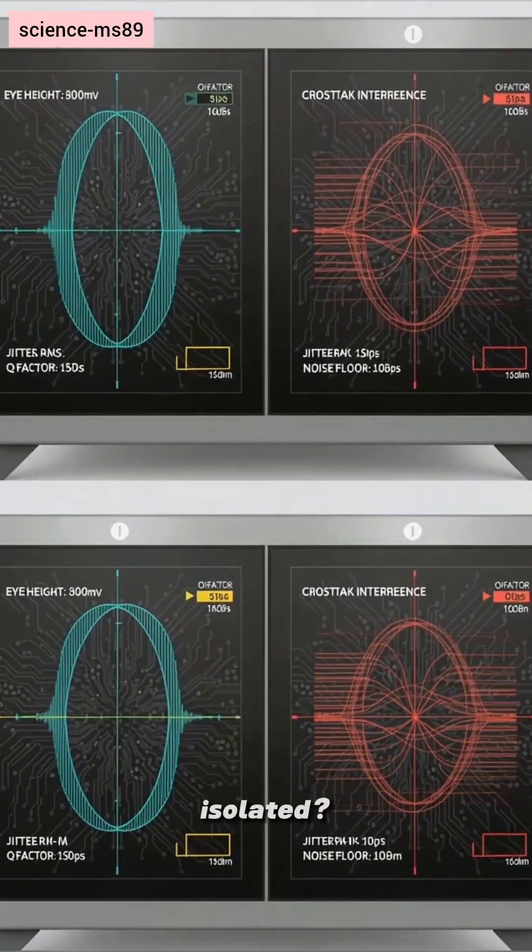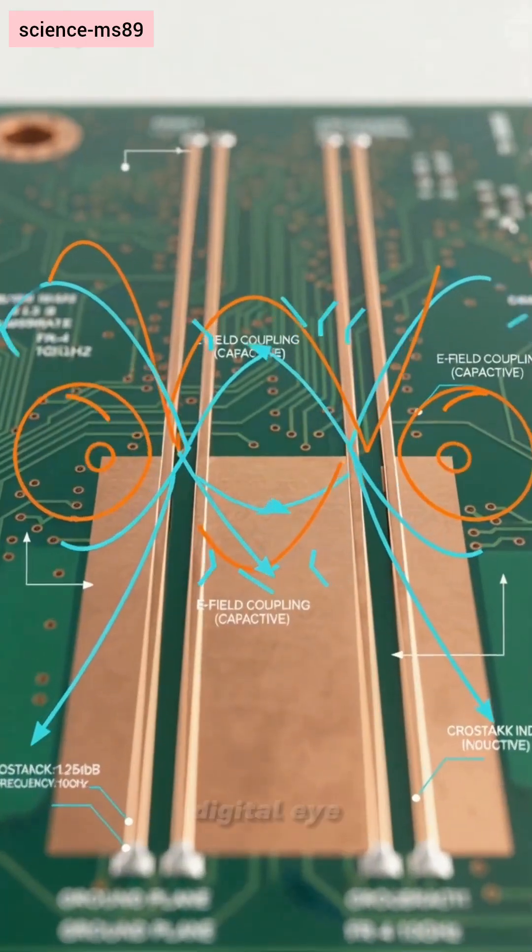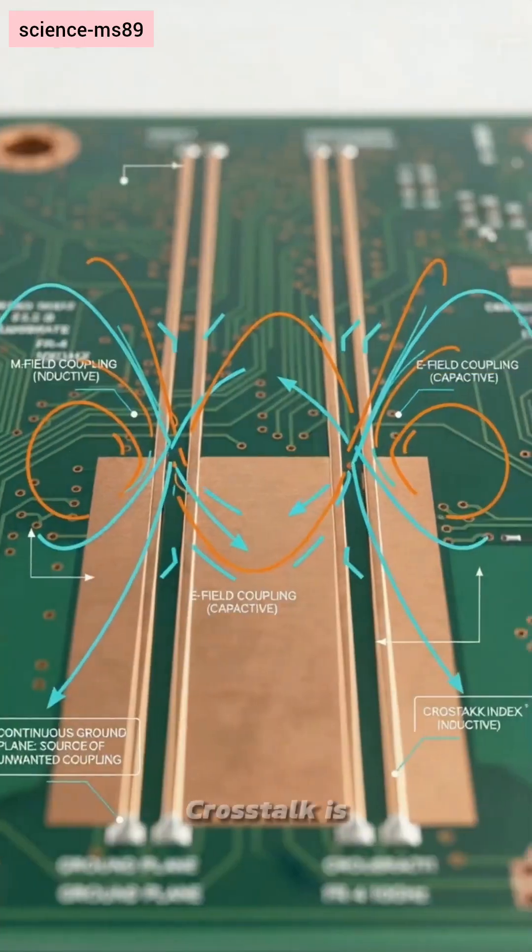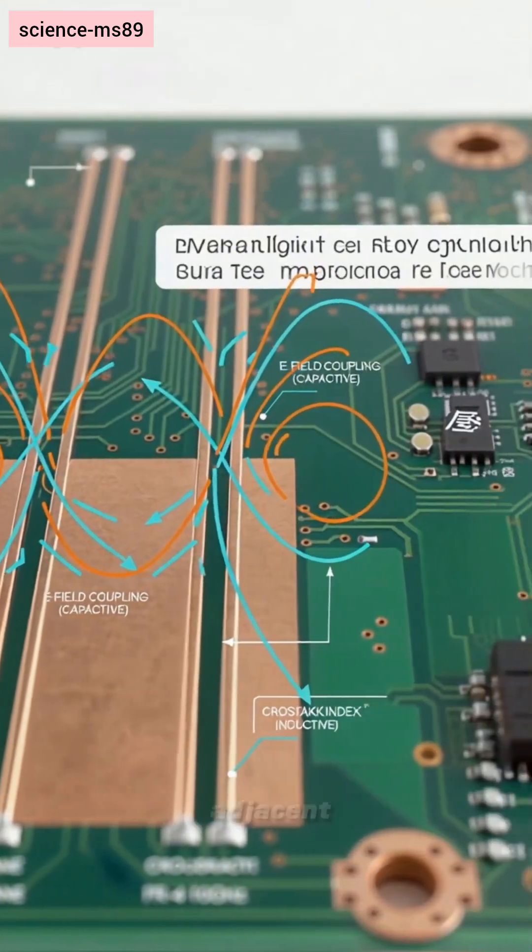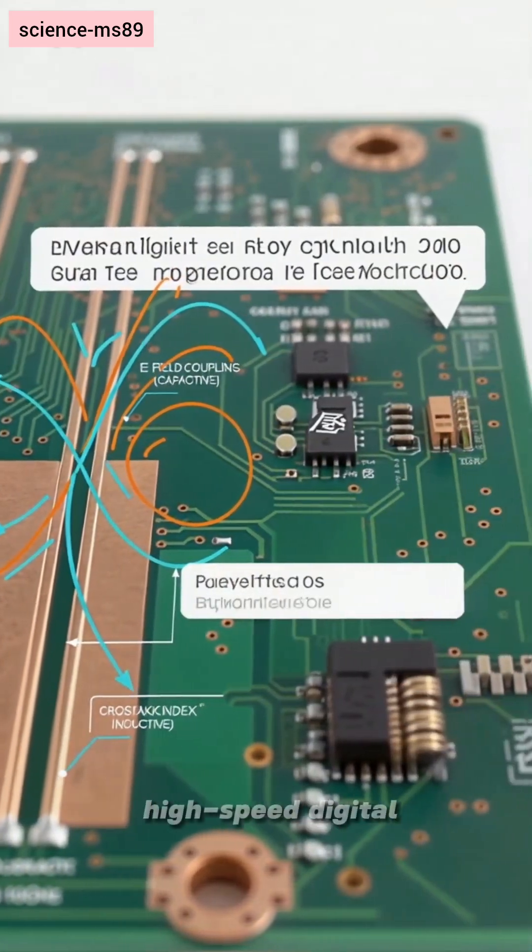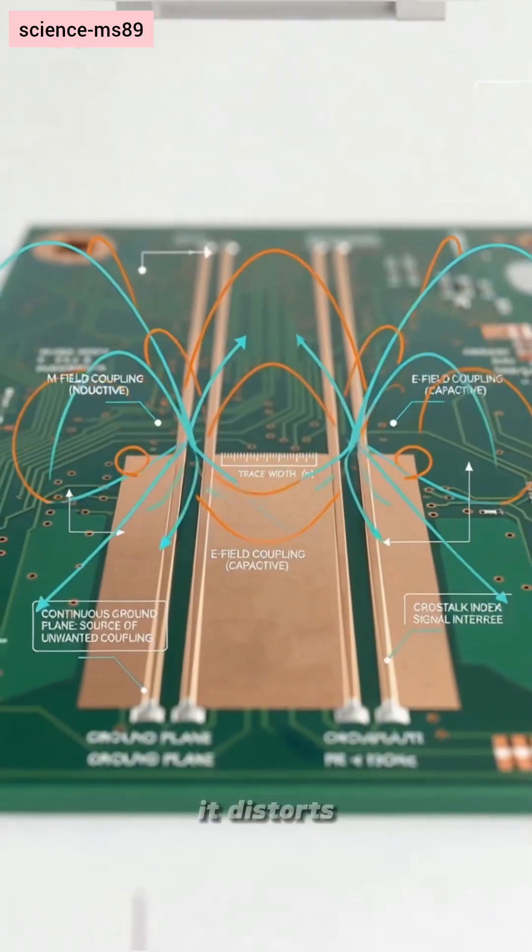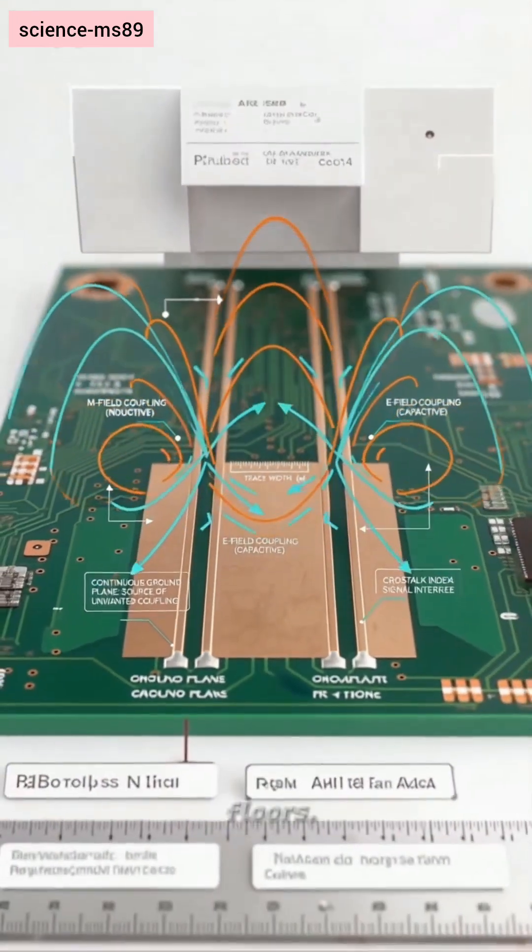Think your traces are isolated? Watch this crosstalk close a digital eye in seconds. Crosstalk is unwanted coupling between adjacent lines. In high-speed digital and RF boards, it distorts timing and raises noise floors.